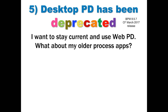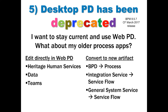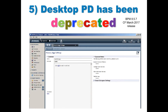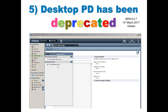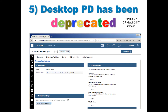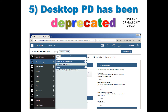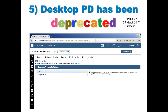Let's say you want to use the web PD more — how do you deal with your older process apps? For some artifacts, you can edit them directly within the web PD. For other artifacts, you can convert them from the old format to the new. Here's an example: I'm in the desktop PD right now and I have an old BPD defined in my app, as well as a GSS and integration service. If I flip over to the web PD and look at my processes, you won't see the BPD there, and you won't see those implementation services. But if you go to these tabs, there's a BPD conversion tab and a service conversion tab.